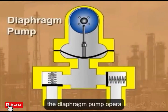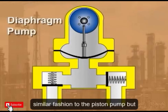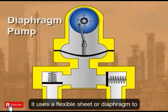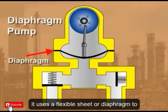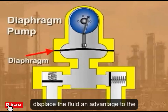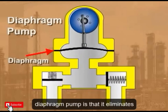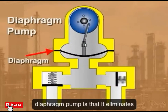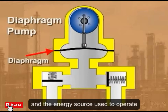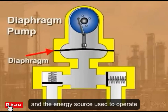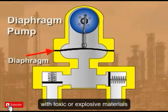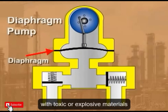The diaphragm pump operates in a similar fashion to the piston pump, but it uses a flexible sheet or diaphragm to displace the fluid. An advantage to the diaphragm pump is that it eliminates contact between the media being pumped and the energy source used to operate the pump. This is a benefit when dealing with toxic or explosive materials.